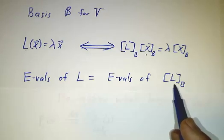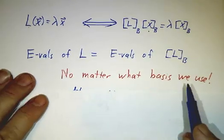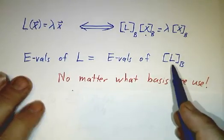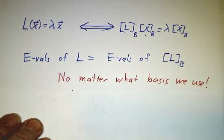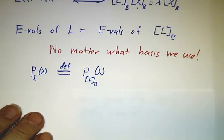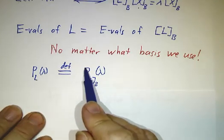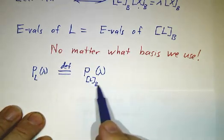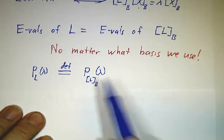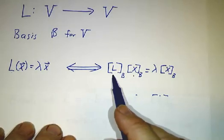So the object of the game is you pick a basis, and it doesn't even matter which basis you use. Different bases will give you different matrices, but those matrices will all have the same eigenvalues. And we'll call the characteristic polynomial of L. We'll define that to be just the characteristic polynomial of this matrix. And no matter what basis you use, you get the same characteristic polynomial. So that's how you find the eigenvalues of L. You find the eigenvalues of this matrix.